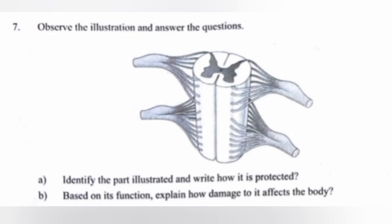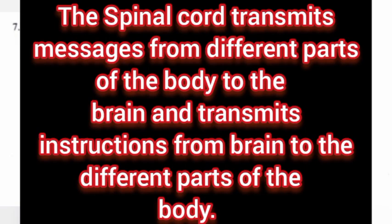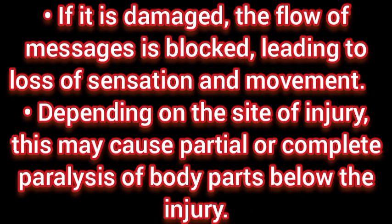Part b: Based on its functions, explain how damage to the spinal cord affects the body. Answer: The spinal cord transmits messages from different parts of the body to the brain and transmits instructions from the brain to different parts of the body. If it is damaged, the flow of messages is blocked, leading to loss of sensation and movement. Depending on the site of injury, this may cause partial or complete paralysis of body parts below the injury.